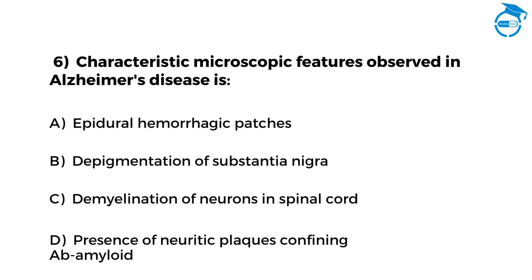Characteristic microscopic features observed in Alzheimer's disease: Option A: epidural hemorrhagic patches. Option B: depigmentation of substantia nigra. Option C: demyelination of neurons in spinal cord. Option D: presence of neuritic plaques containing beta-amyloid.